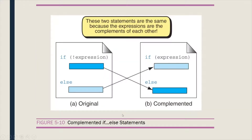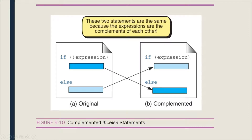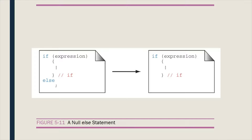This figure shows two statements that are equivalent because their expressions are complements of each other. The first figure shows the original expression: if NOT expression, meaning if the expression is false, statement one is executed; otherwise statement two is executed. The second figure shows the complement: if the expression is true, the first statement executes; otherwise the second statement executes.